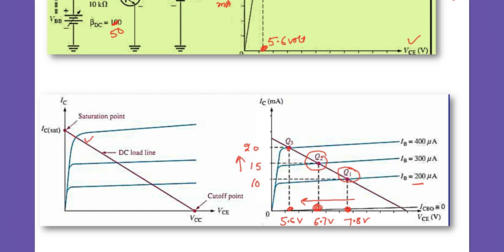To draw the load line, we simply use the three values: at 10 milliamperes VCE was 7.8 volts, at 15 milliamperes it was 6.7 volts, and at 20 milliamperes it was 5.6 volts. These three points — Q1, Q2, Q3 — are marked on the graph between VCE and IC axes, and joining them forms the load line.